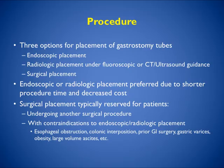In terms of placement of gastrostomy tubes, there are three major techniques: endoscopic placement, radiologic placement using fluoroscopy or CT/ultrasound guidance, and surgical placement. Endoscopic is probably the most common these days. Endoscopic or radiologic placement is preferred due to shorter procedure time, decreased costs, and decreased complications. Endoscopists are very aggressive on doing these procedures, so they seem to have taken control of that process.